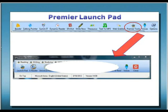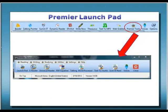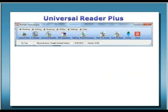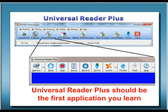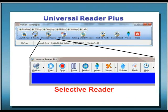Of course, at any time you can launch the full power of any of the applications from the entire suite of desktop Premier tools right from the LaunchPad. Universal Reader Plus is a great general tool for reading a variety of documents and files such as email, webpages, and even word processing files such as MS Word and WordPerfect. We recommend that Universal Reader Plus is the first Premier tool you learn to use because it is so straightforward. Universal Reader Plus is great because it is a selective reader — you get to choose the specific text you want to read simply by using your mouse.